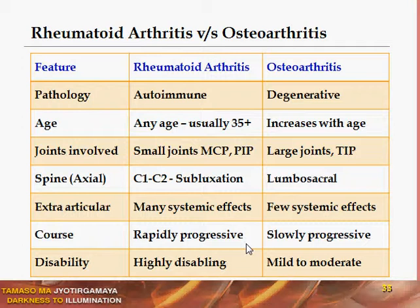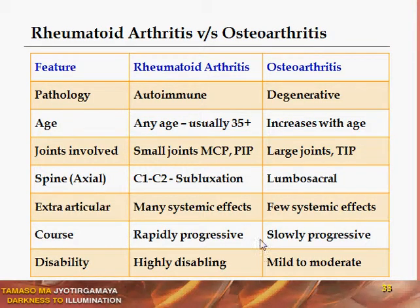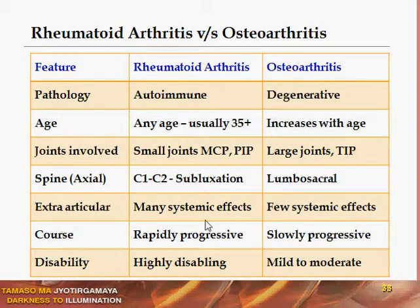The course of rheumatoid arthritis is rapidly progressive — within one to two years the patient becomes incapacitated, severely incapacitated by five years, and very severely incapacitated by ten years. Osteoarthritis is slowly progressive, taking years and decades to produce total disability. RA is highly disabling, while osteoarthritis causes mild to moderate disability. Around 25 percent of RA patients may need surgery, whereas 50 percent or more of osteoarthritis patients require surgical treatment.